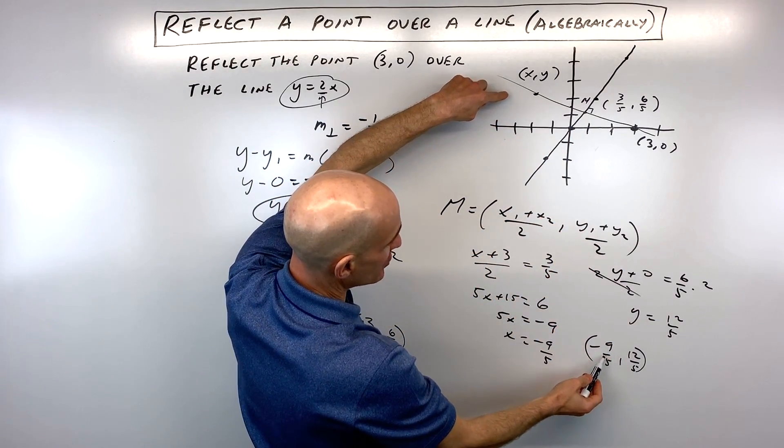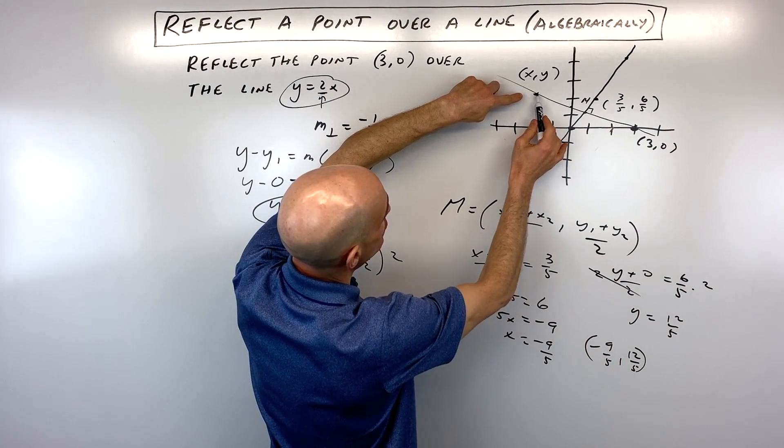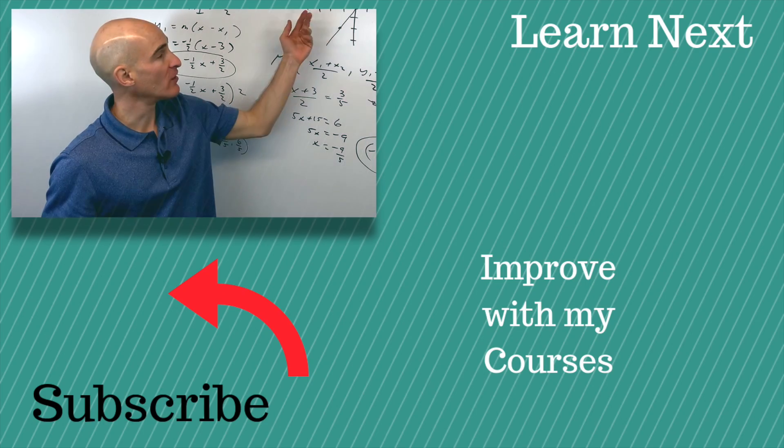Let's see if we're pretty accurate here. This is like negative 1 and 4 fifths. 12 fifths is like 2 and 2 fifths. Yeah, pretty accurate. So that's the image point when you reflect it over the line.